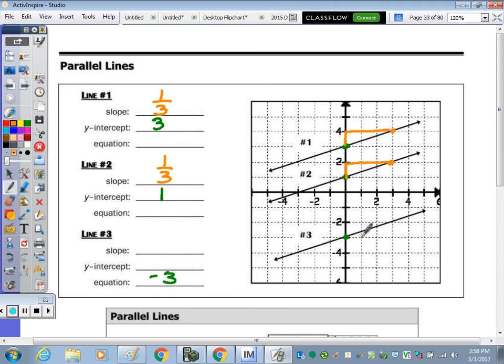And then here, from here to here, up 1 over 1, 2, 3. So the slope of every one of those lines is the same, but they have different intercepts.